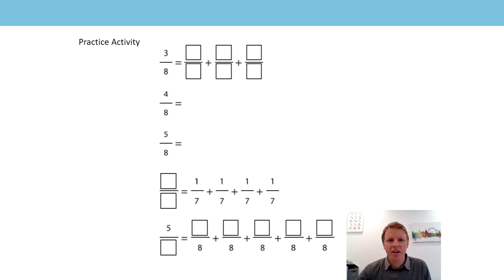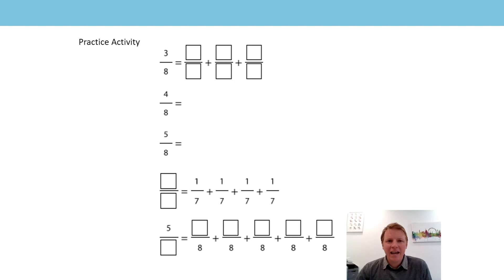Hi everyone, Mr East here. Let's start off by going through the practice activity from the previous lesson. The first one: three eighths equals something added three times — repeated addition of unit fractions. We can look at the denominator eight to know they must all be eighths. The numerator is three, so three one-eighths would be equal to three eighths.